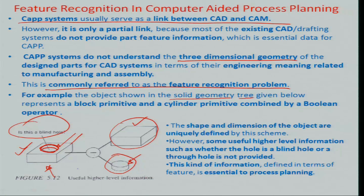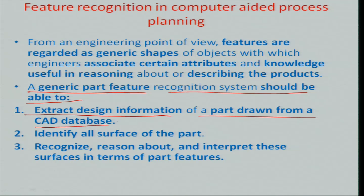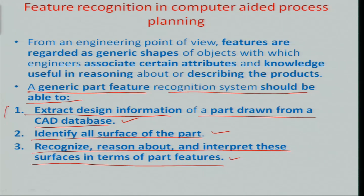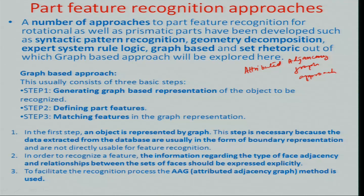The main question is how to do it. A generic part feature recognition system should be able to: first, extract the design information of a part drawn from a CAD database — meaning the coordinate data; second, identify all surfaces of the part; and third, recognize and interpret these surfaces in terms of part features. These are the three essential components in the feature recognition algorithm. We will look at the attributed adjacency graph approach for doing this feature recognition.